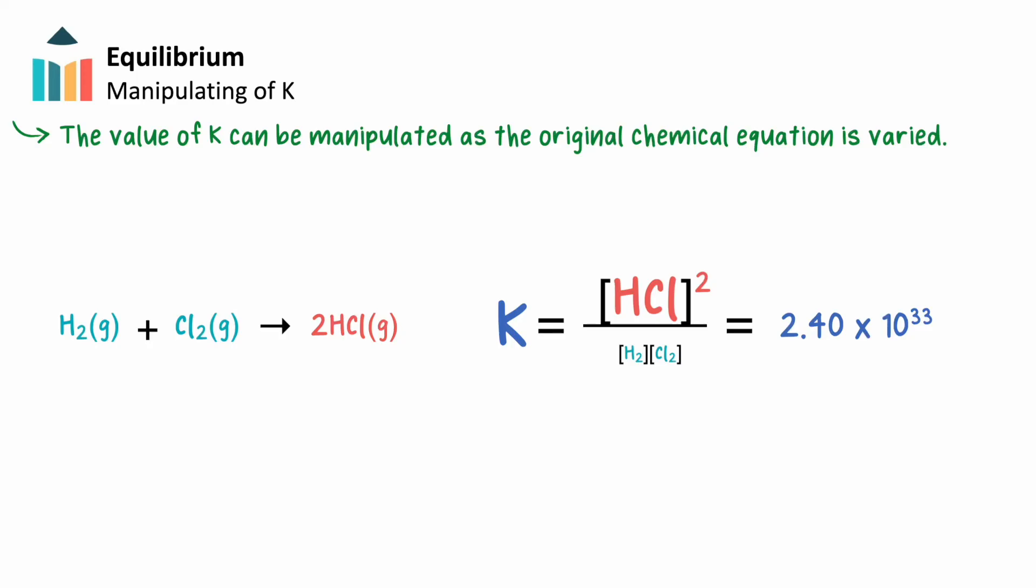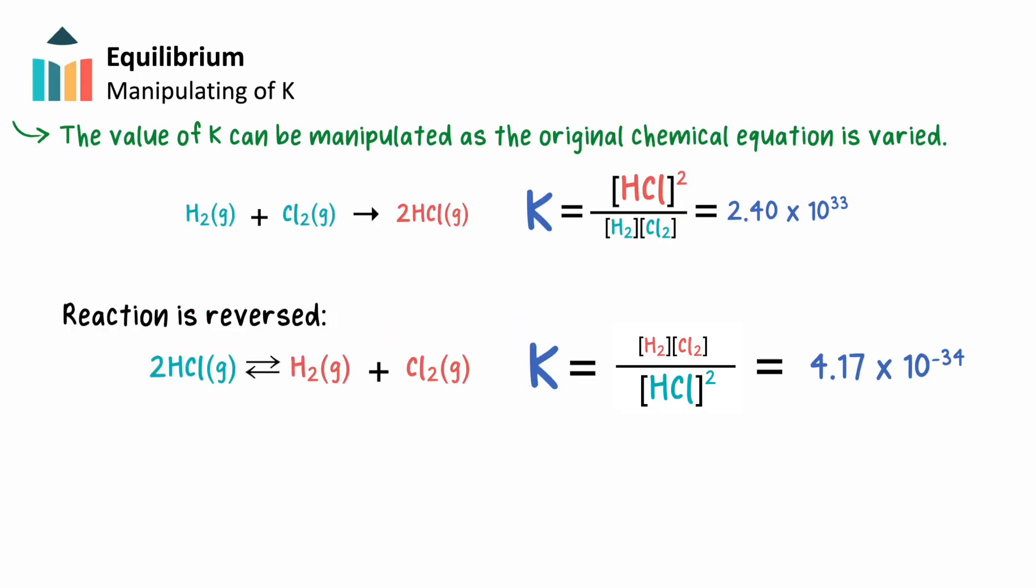If the reaction is reversed, we can see that the equilibrium expression is flipped as a result. This means the value of K for the reversed reaction will be the reciprocal of the original value. Note that K is far less than 1, meaning that the equilibrium for the reversed reaction lies far to the left, with far more reactants than products.